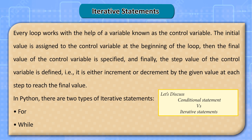Every loop works with the help of a variable known as the control variable. The initial value is assigned to the control variable at the beginning of the loop, then the final value of the control variable is specified, and finally the step value is defined — i.e., it is either incremented or decremented by the given value at each step to reach the final value. In Python, there are two types of iterative statements: for and while.